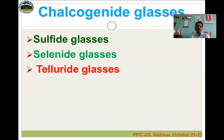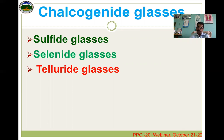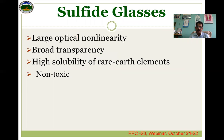Chalcogenide glasses are of three types: sulfide glasses, selenide glasses, and telluride glasses. They differ in their glass-forming ability, glass-forming region, and in their IR transmission region. Depending upon their properties they are used accordingly, but here we will concentrate on sulfide glasses.